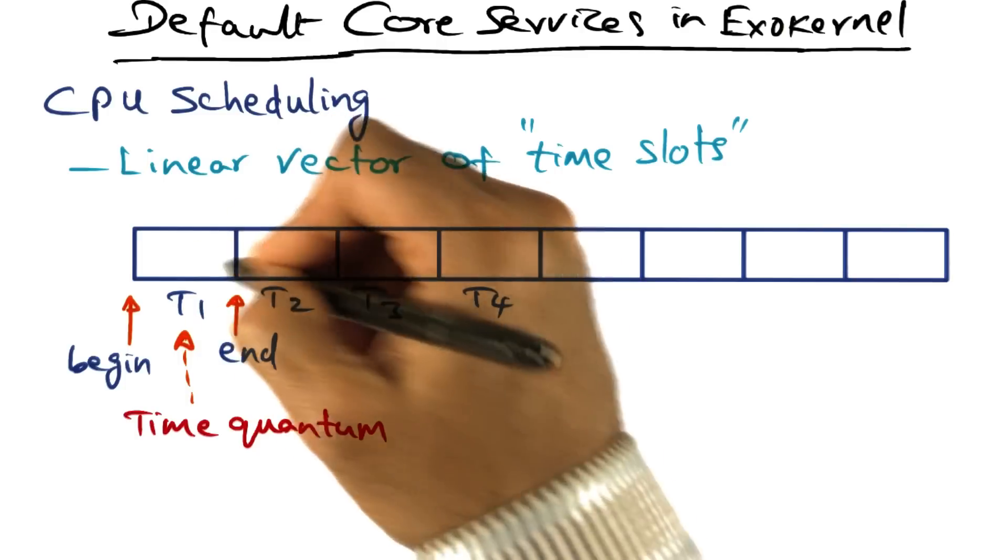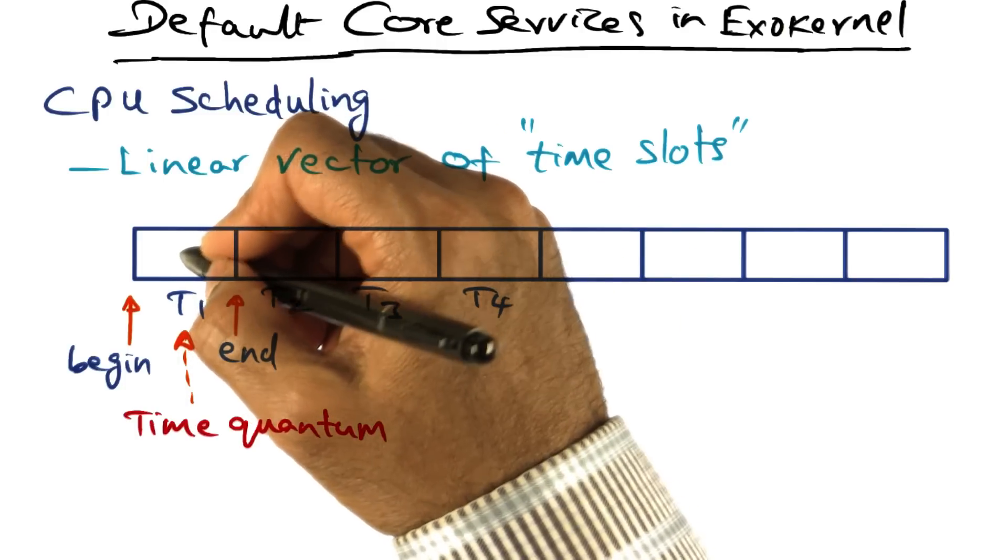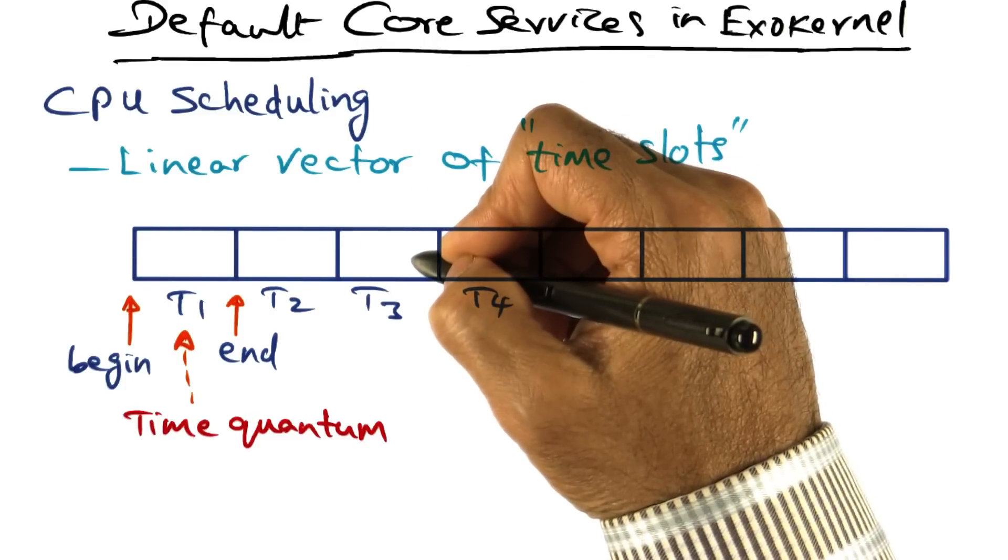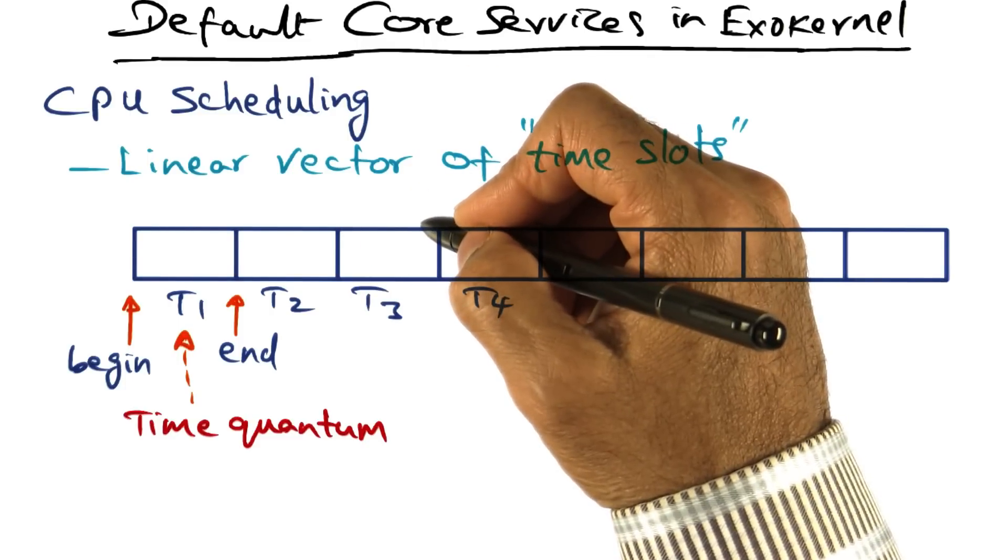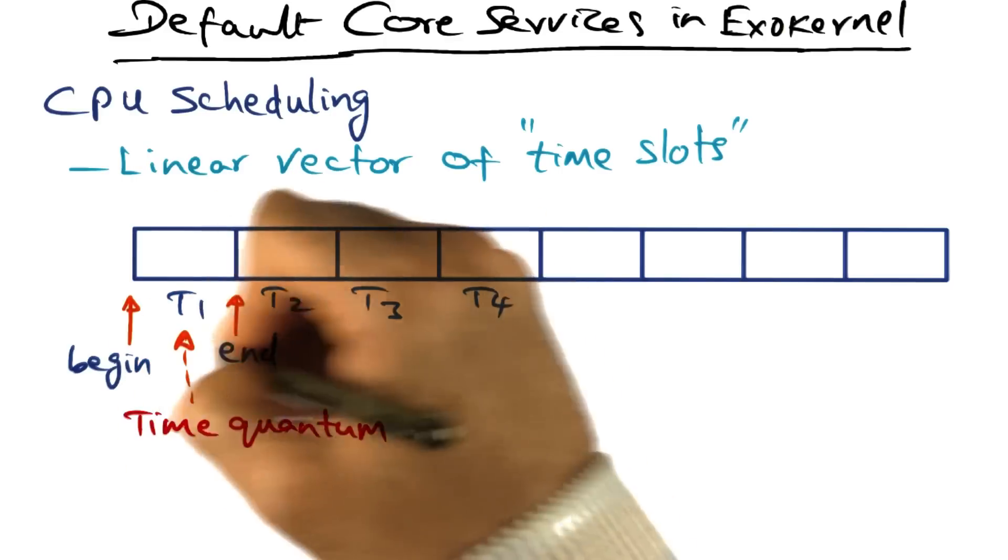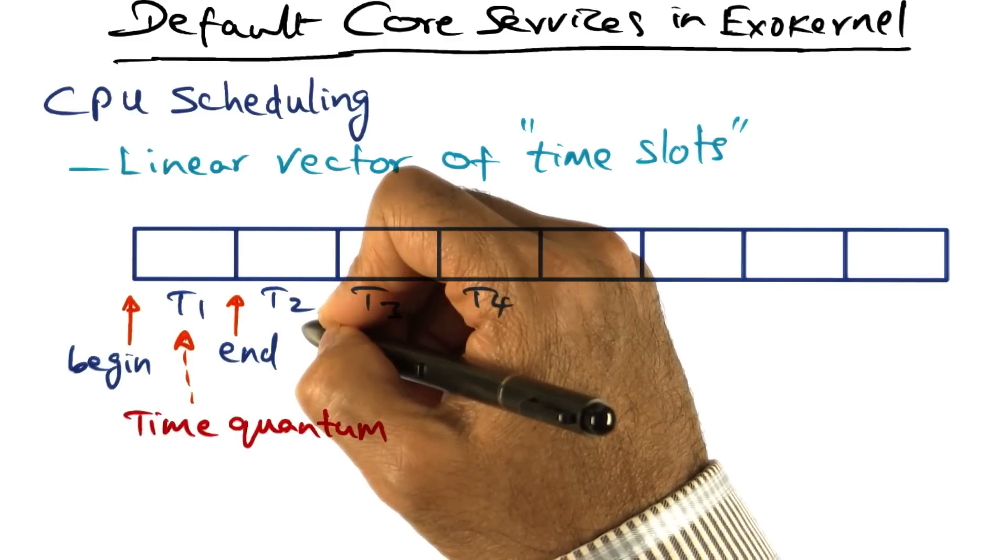These time quantums represent the time that is allocated to the library operating systems that live on top of exo-kernel. The time quantum is bound by the begin and end markers for each library operating system.